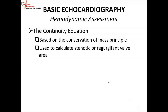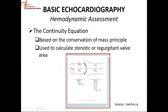The continuity equation is based on a conservation of mass principle, and we can use it to calculate areas and volumes. In cardiology, we can calculate things like the aortic valve area, the mitral valve area, and regurgitant volume across any of the valves. The principle states that if you have a closed circuit and a narrowing in any area, and if you know the orifice of the area that's not narrowed, then you can calculate the area of the narrowed surface.